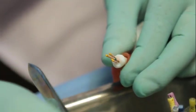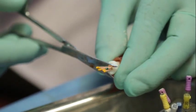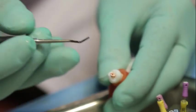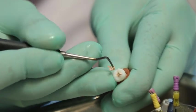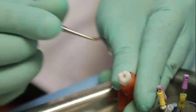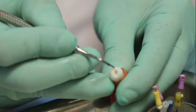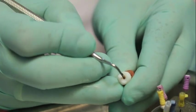Next you have to remove the excess GP. A heated instrument is used to remove the excess GP. Using a plugger you can vertically condense the GP.